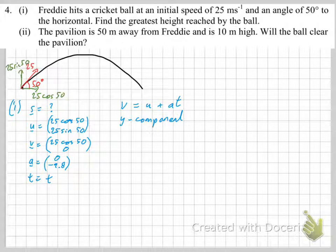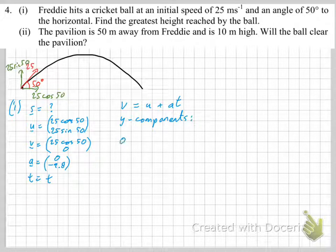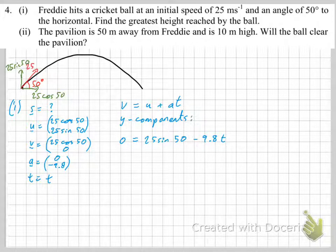Remember in the previous question, the x component when substituted into this equation gave us absolutely nothing — it just said 25 cos 50 equals 25 cos 50, which we already knew. That's going to happen again here. So just look at the y components. V is 0, U is 25 sin 50, A is minus 9.8. Rearranging gives T equals 1.954 seconds — that's how long it takes to reach the highest point.